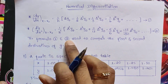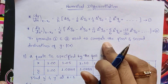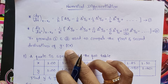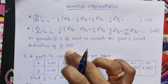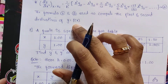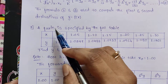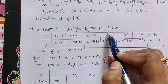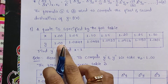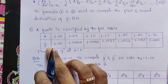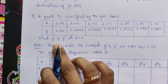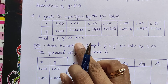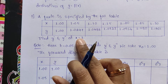So formulas 1 and 2 are used to compute the first and second derivative of y = f(x). Let us go through one example. Let us take a function specified by the following table. In this table, x values and y values are given. Here we have to find y′ and y″ at x = 1.